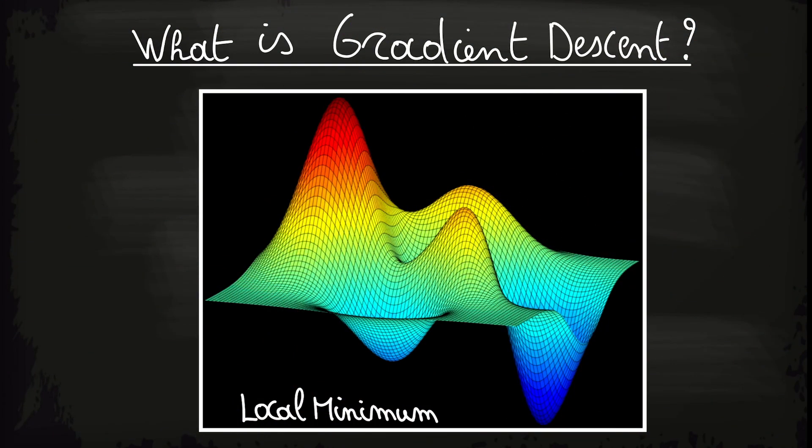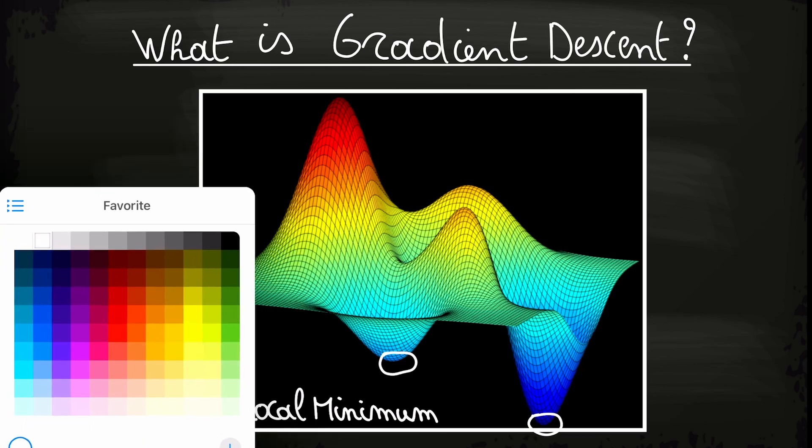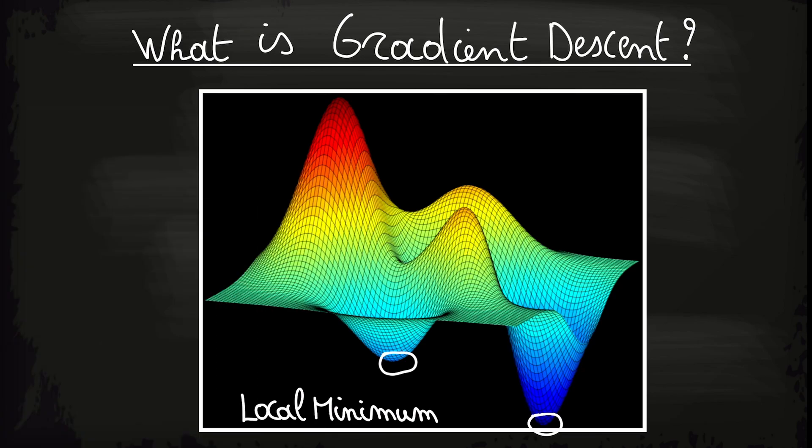If we look at this cost function, we see there are two local minima. One here and one over here. Now to explain the concept of gradient descent, we will take an initial value for theta 0 and theta 1. We assume this brings us in this point over here.